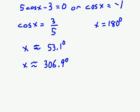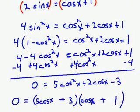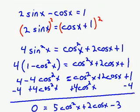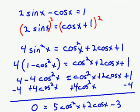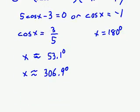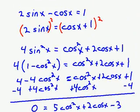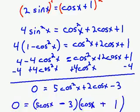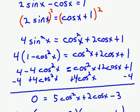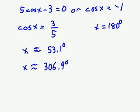The problem here is, we ended up squaring both sides of the equation. Sometimes when you do that, you introduce extraneous solutions. It turns out, if you try to plug in the 306.9 degree number into the original equation, you'll get an untrue statement, which means 306.9 degrees is not a solution.